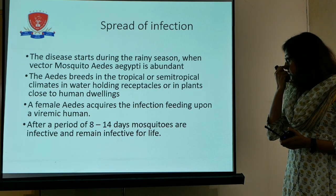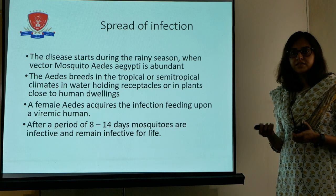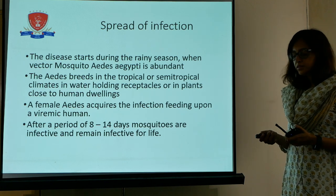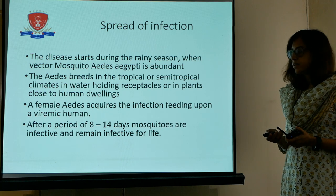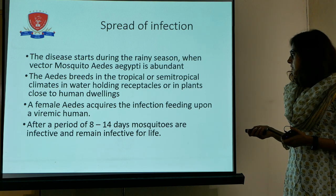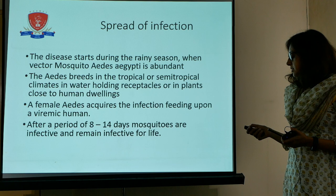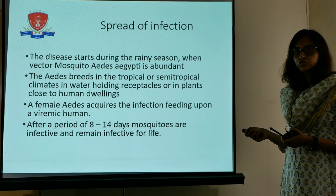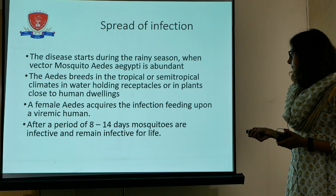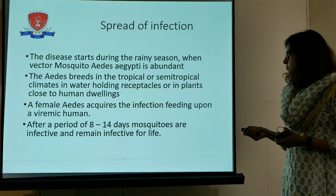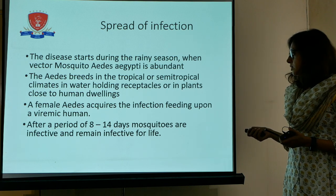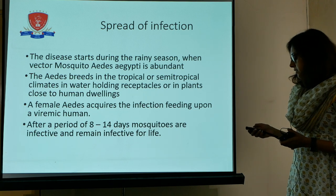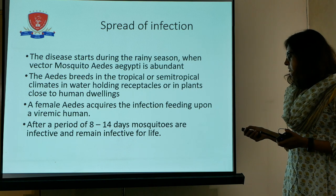How does the infection spread? The disease usually starts in the rainy season when mosquitoes are abundant, especially in tropical countries. It generally occurs in water-holding receptacles or in plants close to human dwellings. A female Aedes mosquito feeds upon a human and after a period of around 8 to 14 days the infection is transmitted.